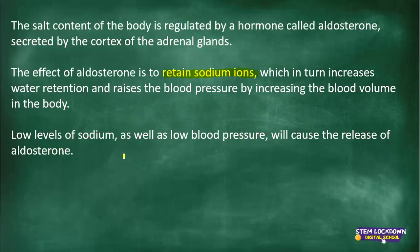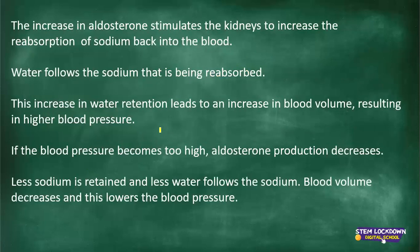When you do your negative feedback mechanism and you have a decrease of sodium, you know that more aldosterone will be secreted by the adrenal glands. And if there is a high concentration of sodium ions in the blood, then aldosterone will not be secreted, to allow it to go back to normal. The increase in aldosterone stimulates the kidneys to increase the reabsorption of sodium back into the blood. Water follows the sodium that is being reabsorbed. This increase in water retention leads to an increase in blood volume, resulting in higher blood pressure.